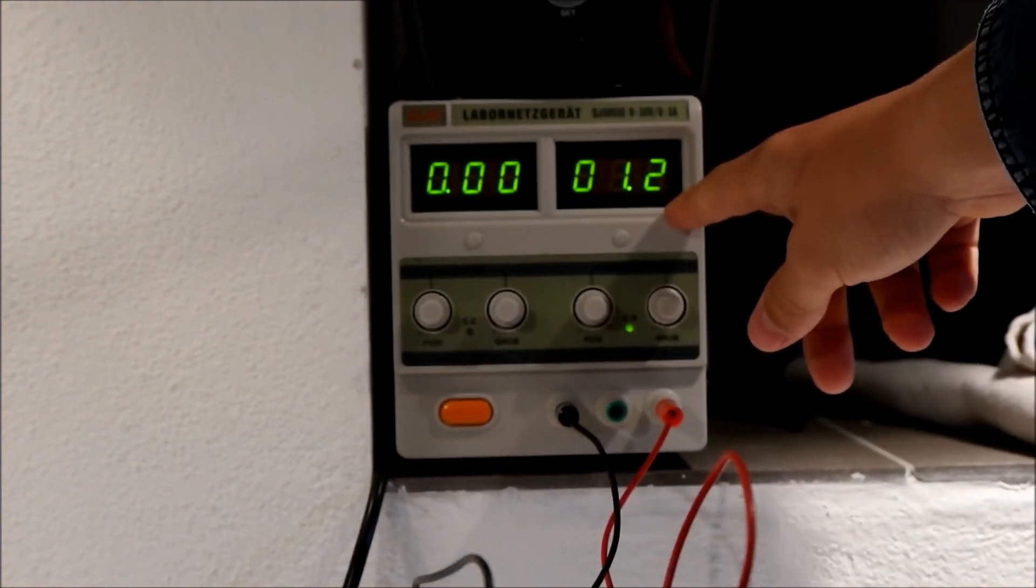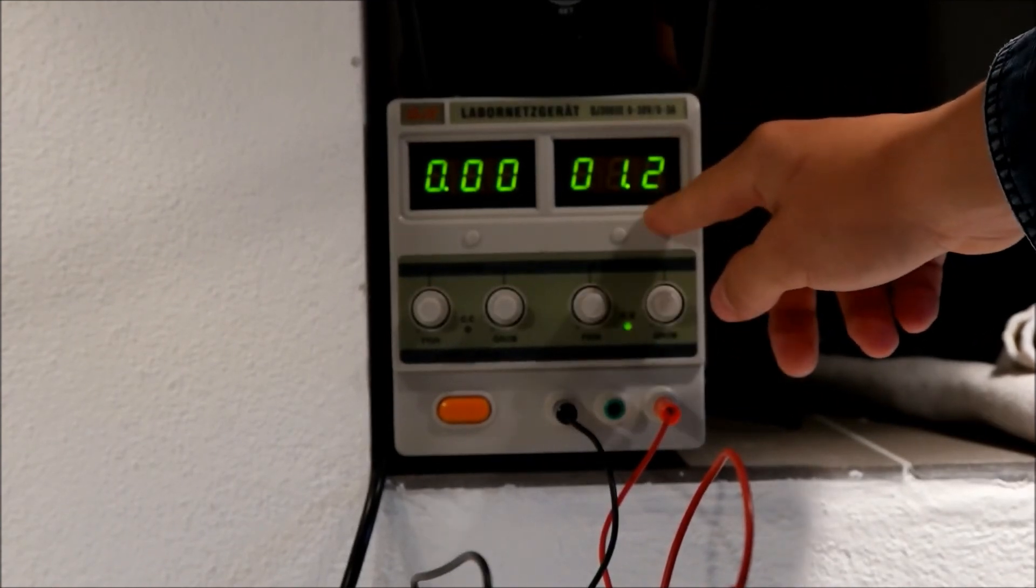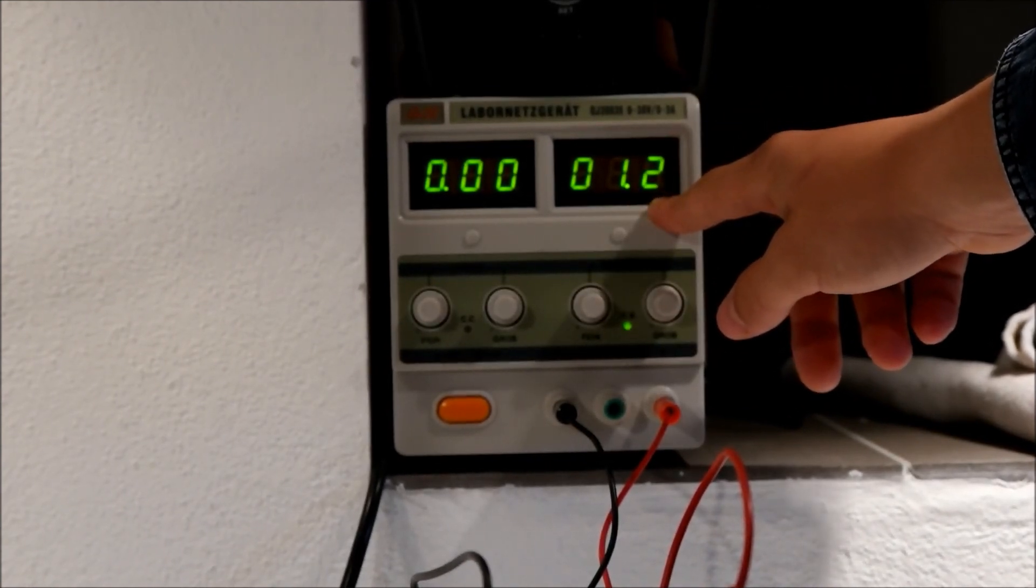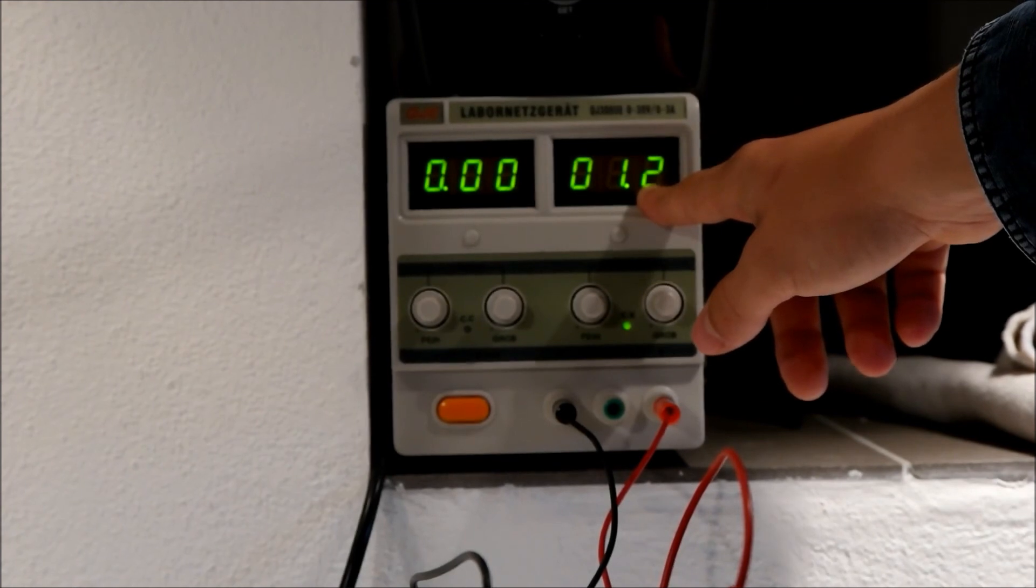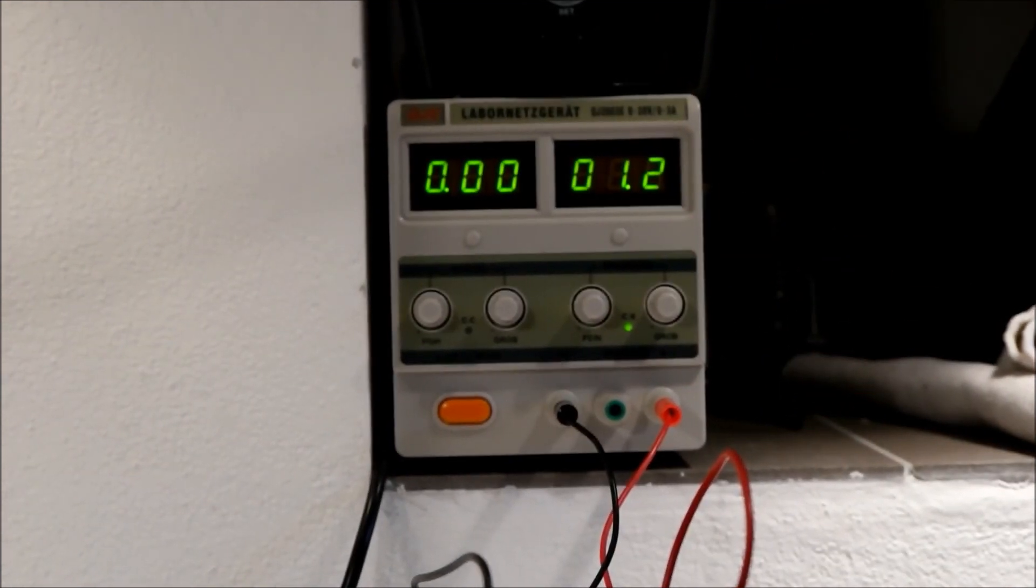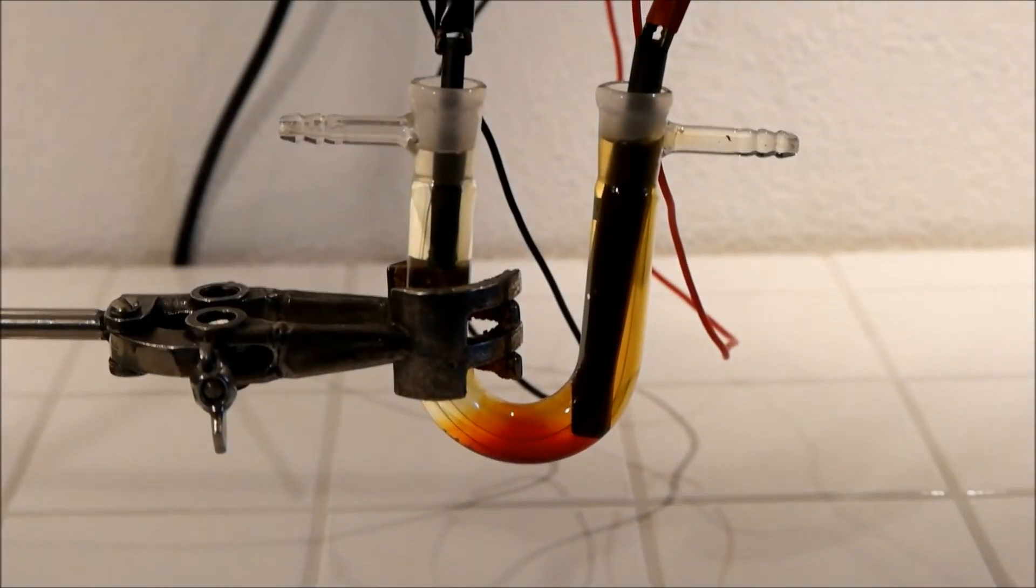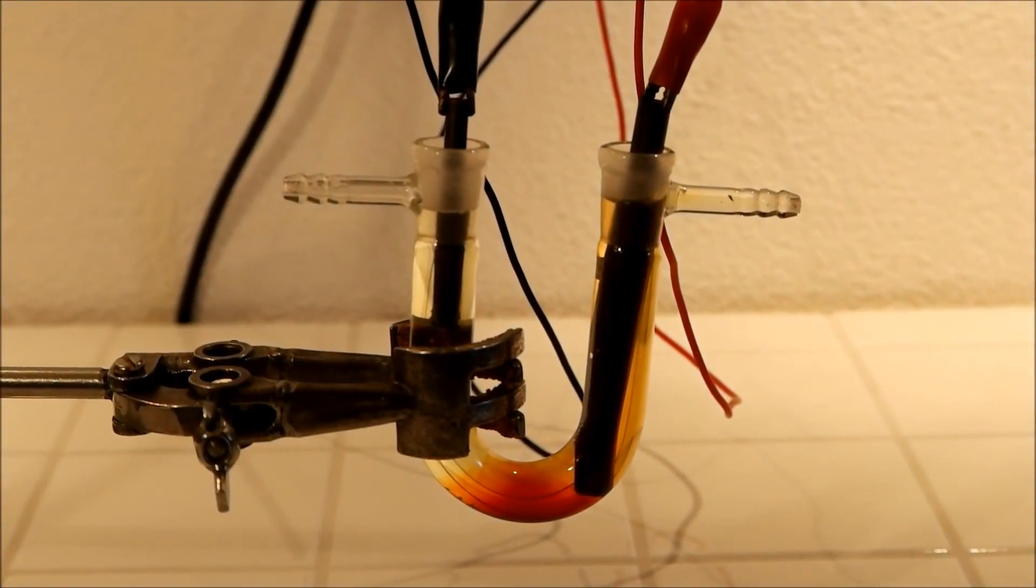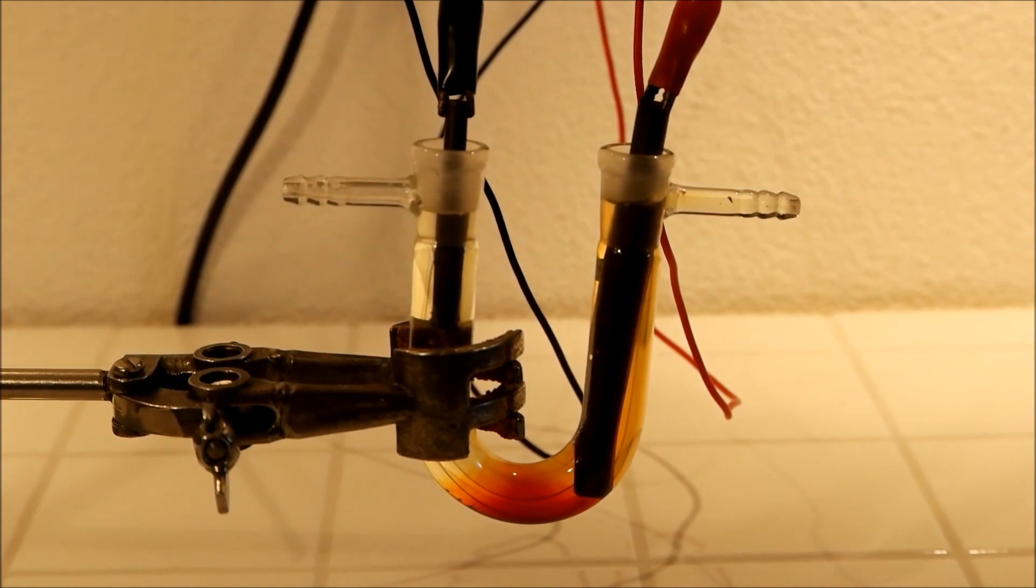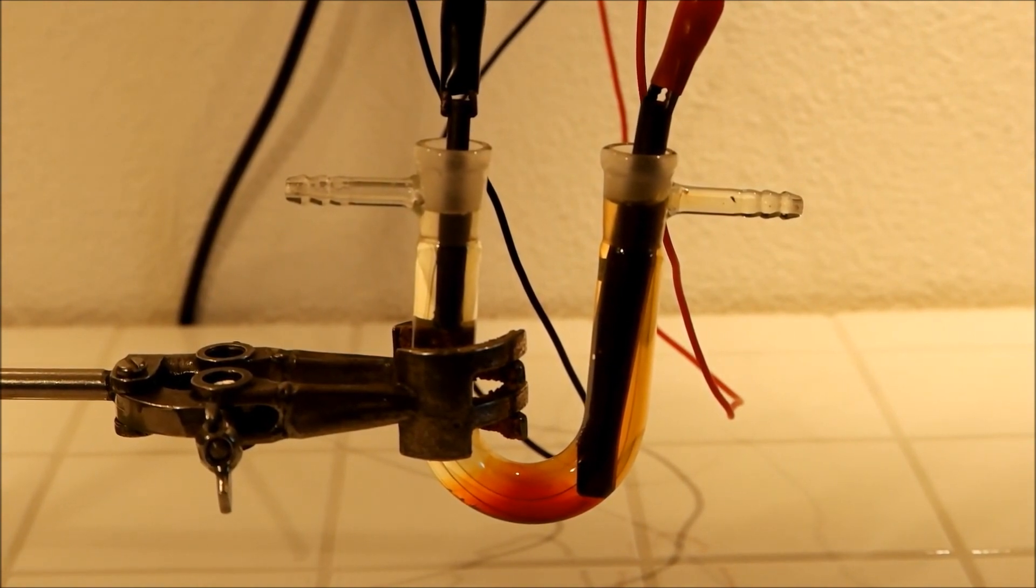Now there is still 1.2 volts shown and this voltage is because now it's something like the reverse reaction and the u-tube is something like a battery. So the pure zinc and the pure iodine get back to zinc iodide.